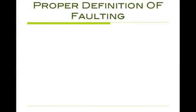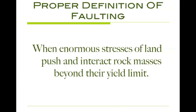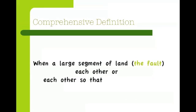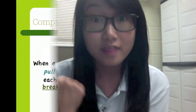Next, I'm going to show you the difference between a proper definition of faulting and a more comprehensive definition of faulting. The proper definition of faulting is: when enormous stresses of land push and interact rock masses beyond their yield limit. The comprehensive definition of faulting is: when a large segment of land, which is the fault, pulls from each other or pushes against each other so that the piece of land breaks apart from its original figure. That one was easier to understand, right?